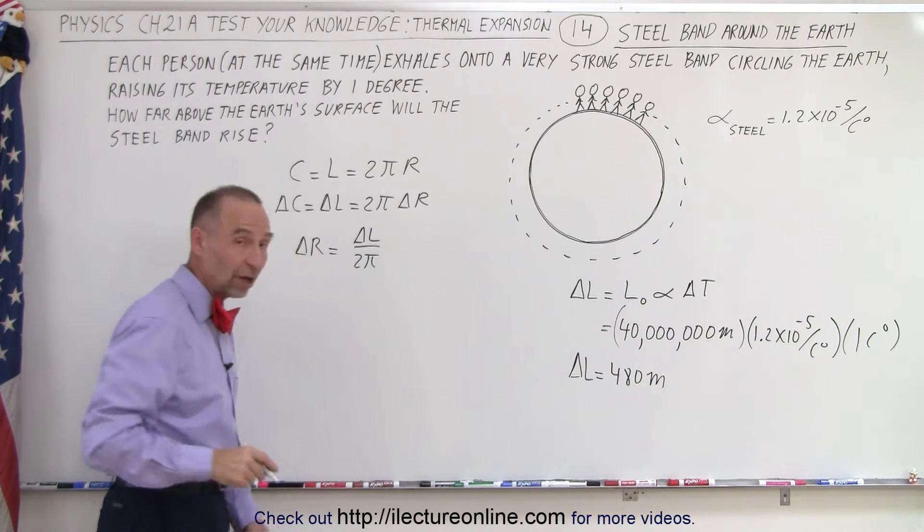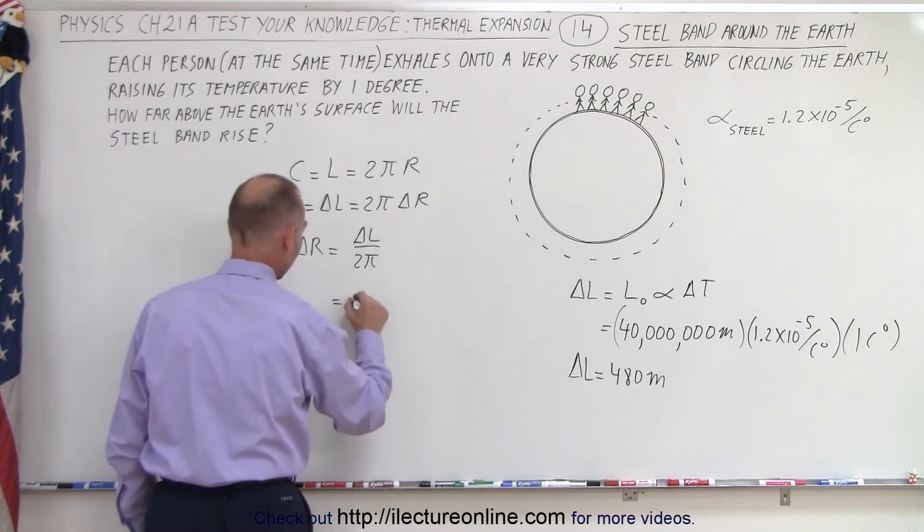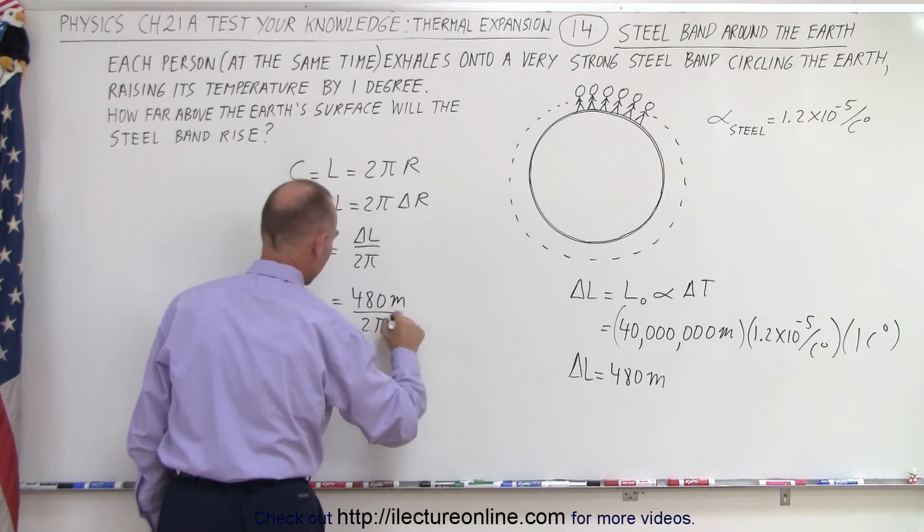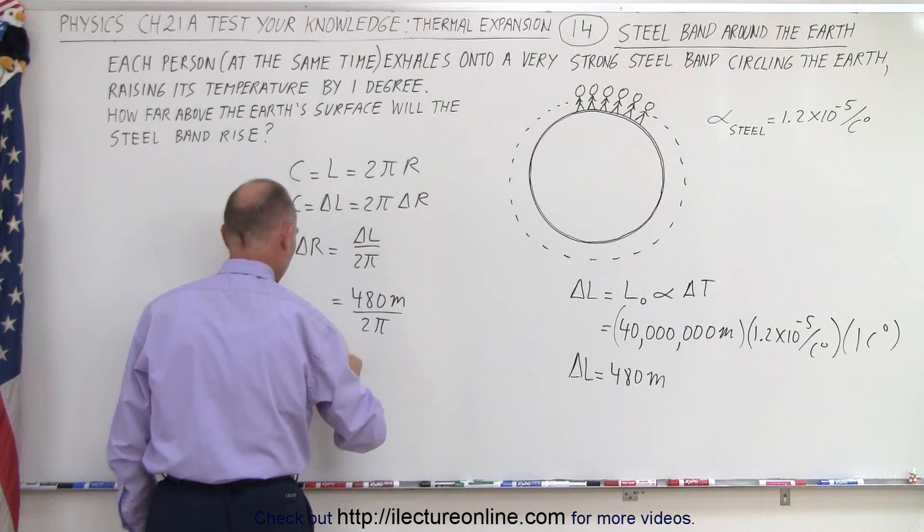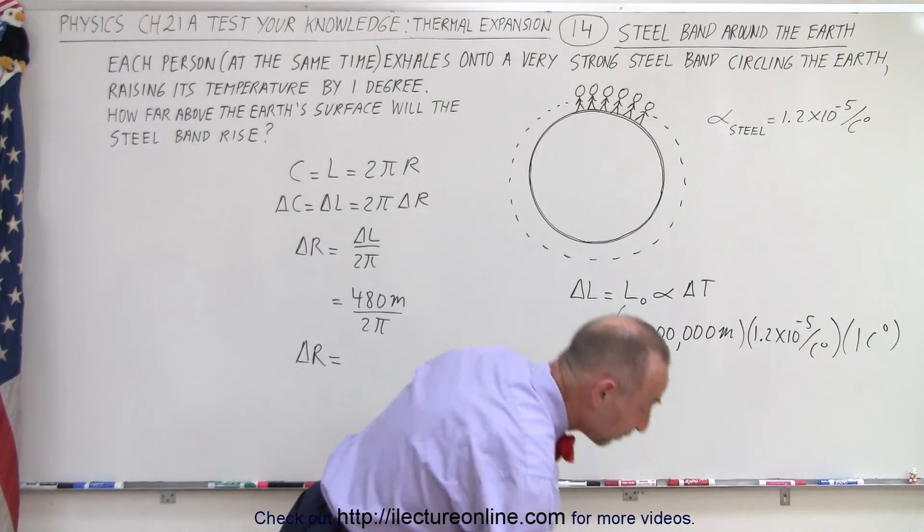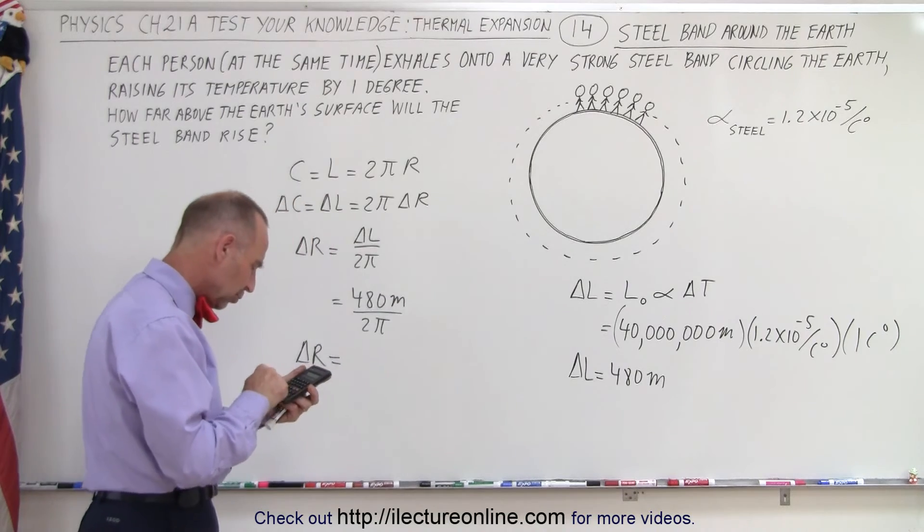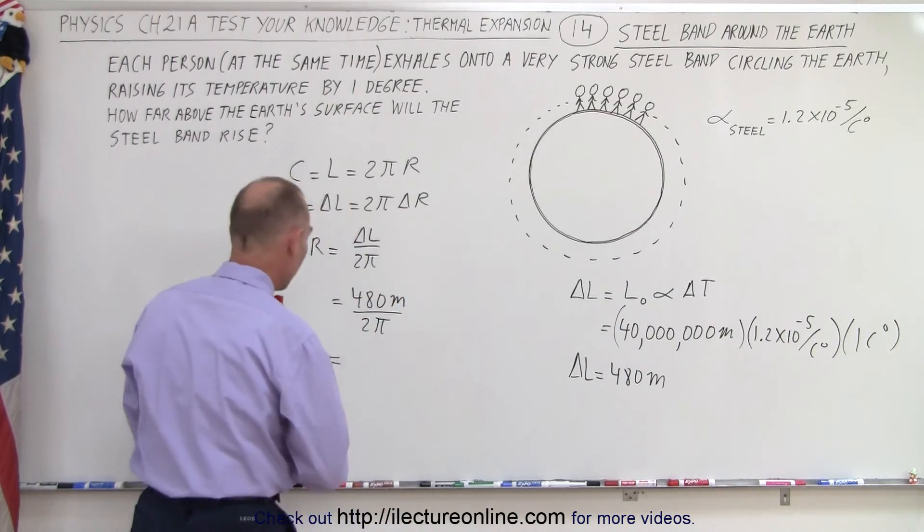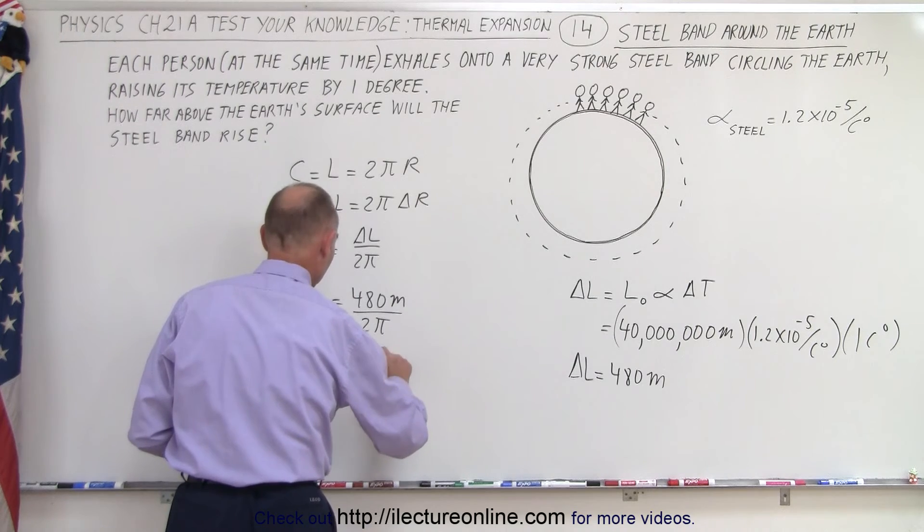Now the change in the length we saw was 480 meters, so this is equal to 480 meters divided by 2π. So the change in the radius, meaning the amount that the band will rise up, is 480 divided by 2π, equals about 76 meters.